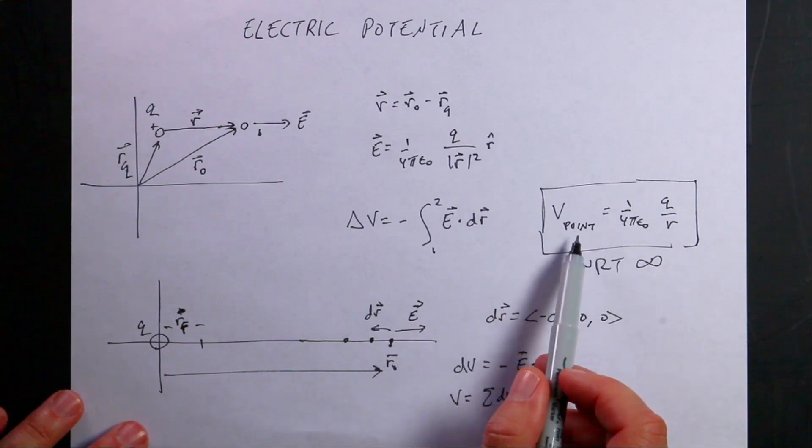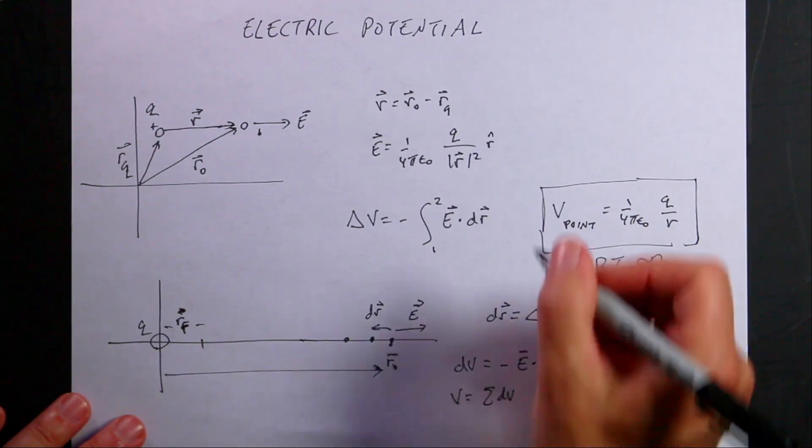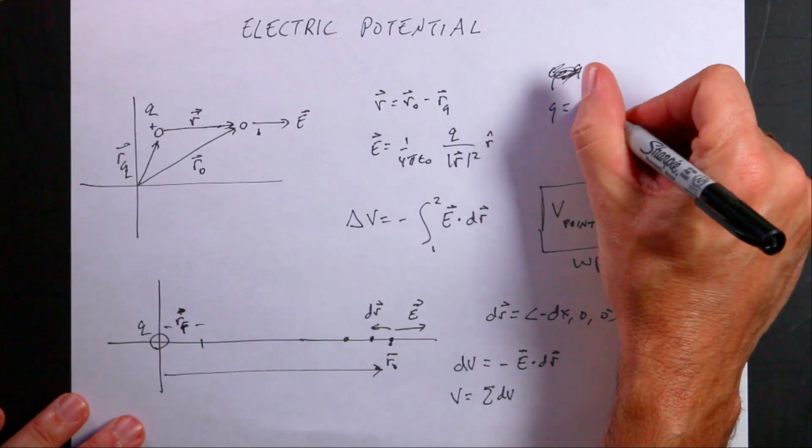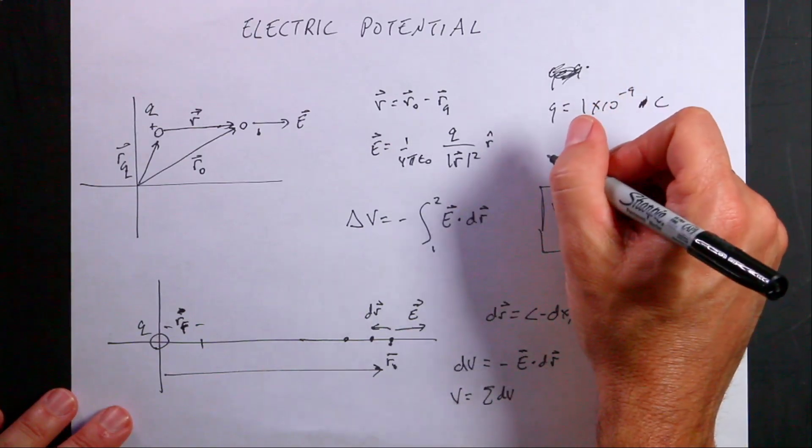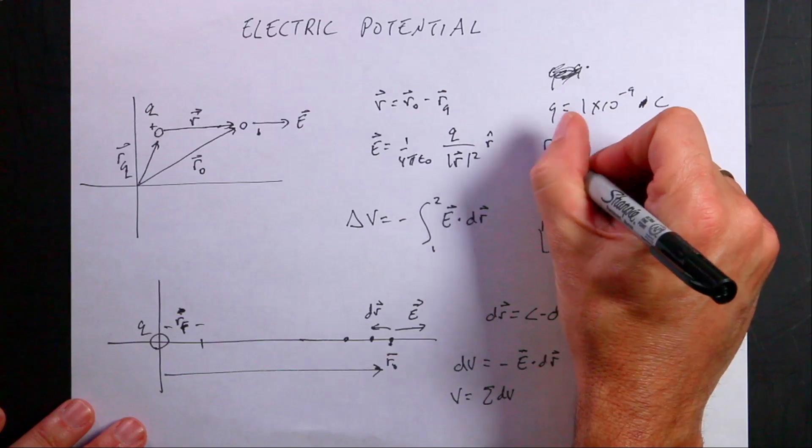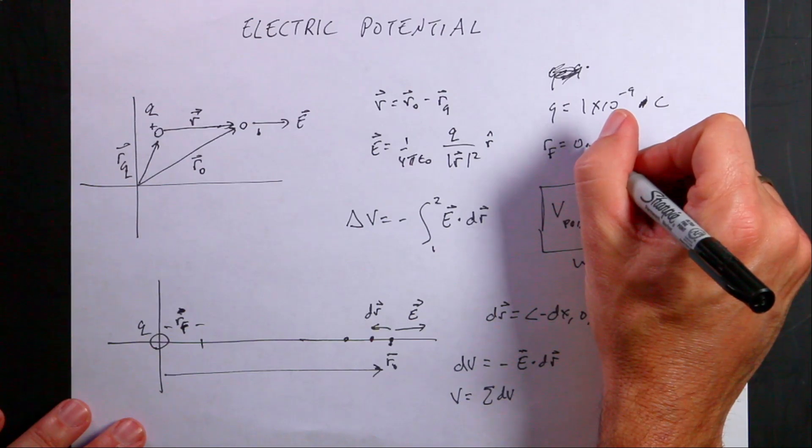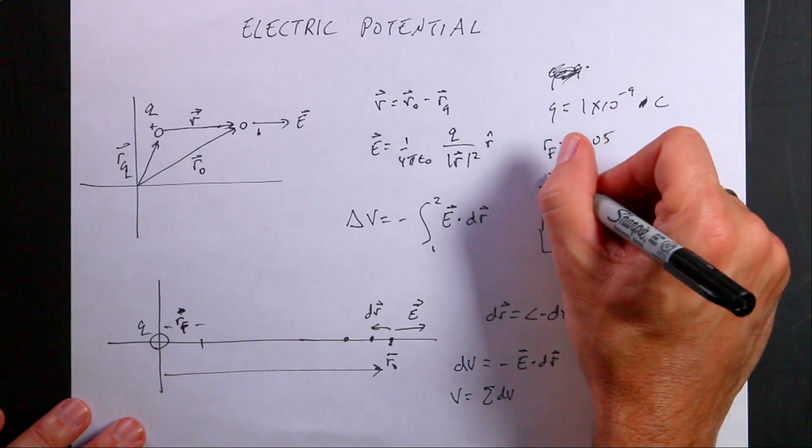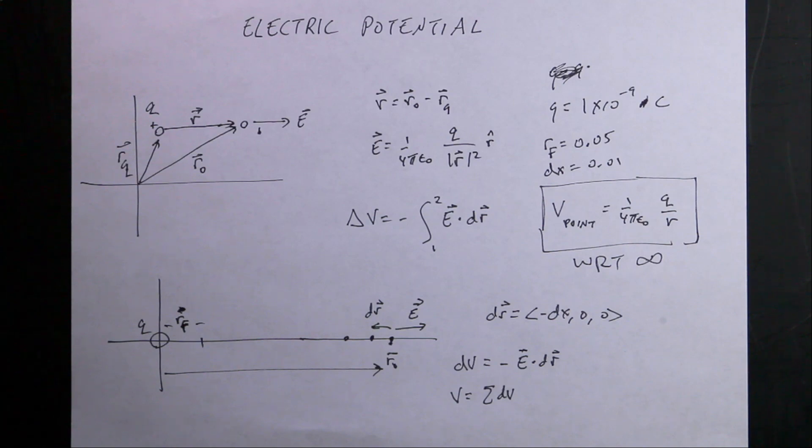Now this is starting from infinity. I can't start from infinity, so I'm going to start from something just really big. Okay, so let's pick some values. First, I'm going to use Q equals 1 nano coulomb, 1 times 10 to the negative 9th coulombs. Let's go to our final, let's say 0.05, so 5 centimeters. And let's pick dx, my step size, of 0.01. If we need to change this, we can. Okay, I think we're ready to do this. Let's jump over here to Python and code this up and see what happens.